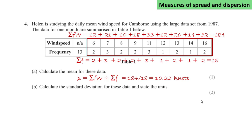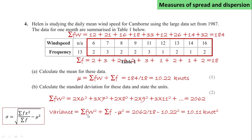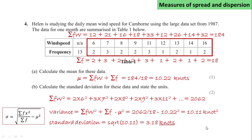We're asked to calculate the standard deviation and state the units. We use the frequency table formula. We know the mean μ and σF; we need to calculate σFW². So 2×6², 3×7², and so on, which works out to be 2062. The variance equals σFW²/σF − μ², giving 10.11, with units of knots squared. The standard deviation is the square root of this: 3.18 knots.